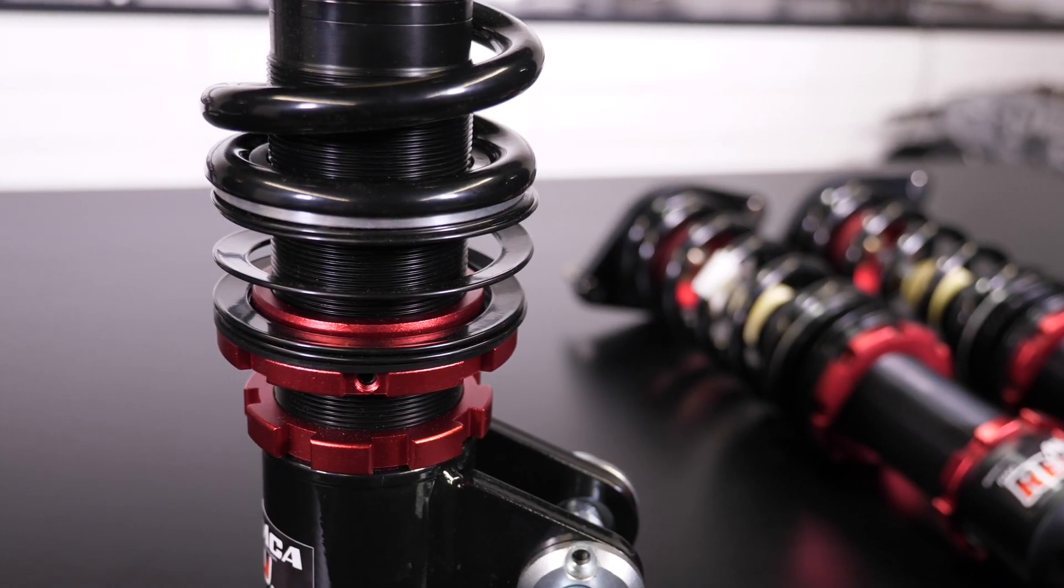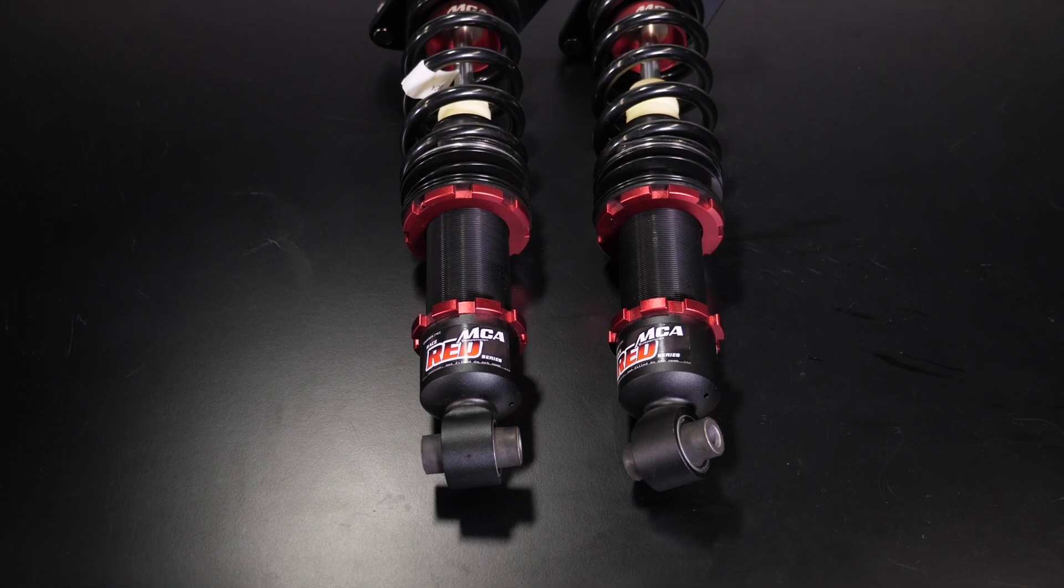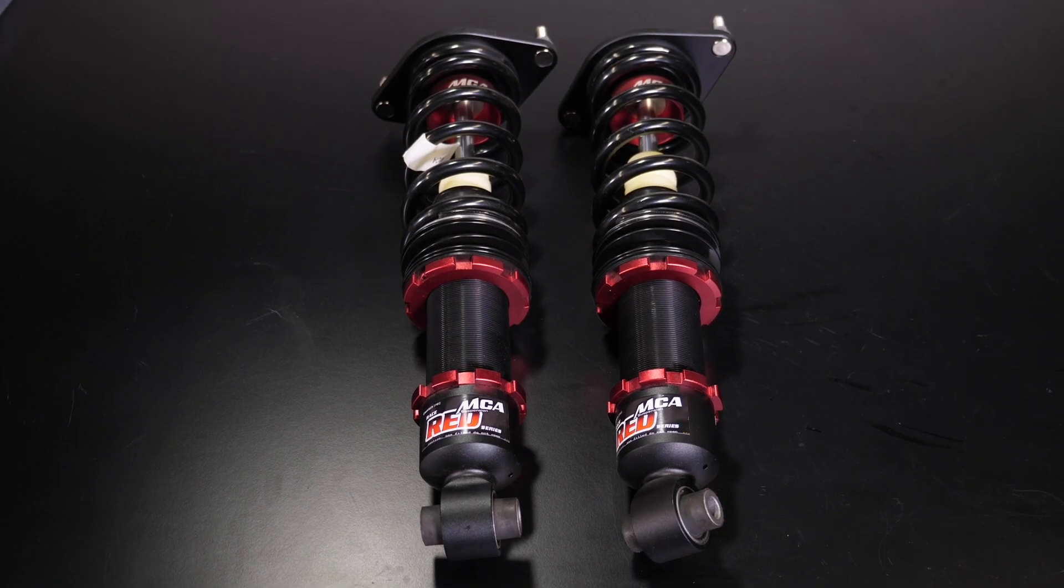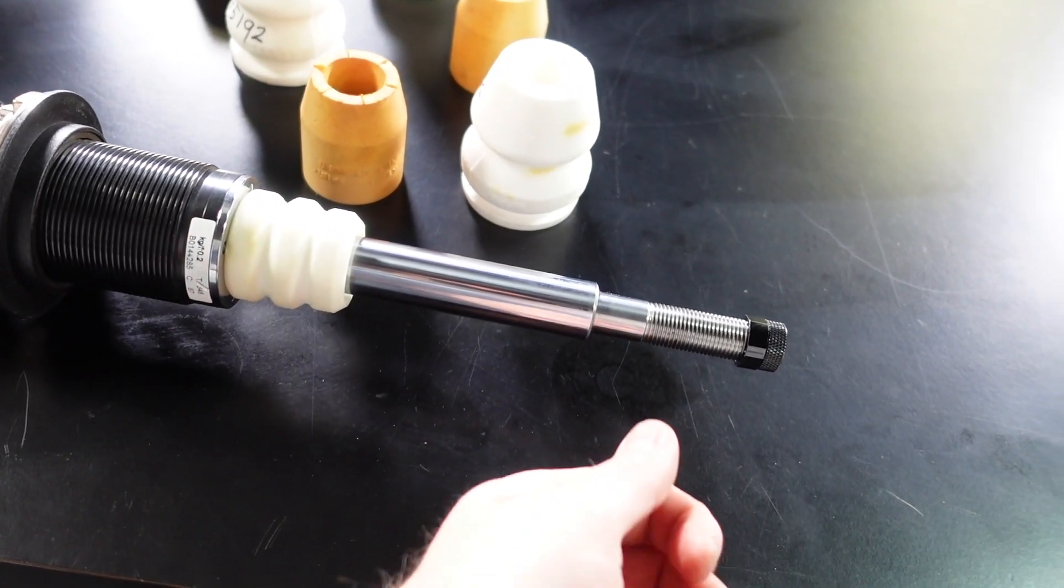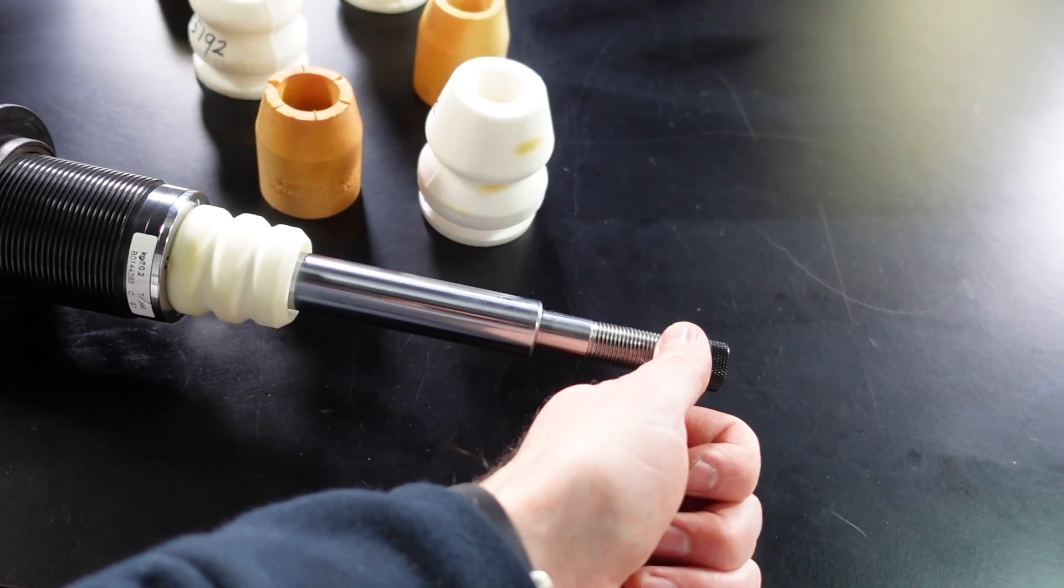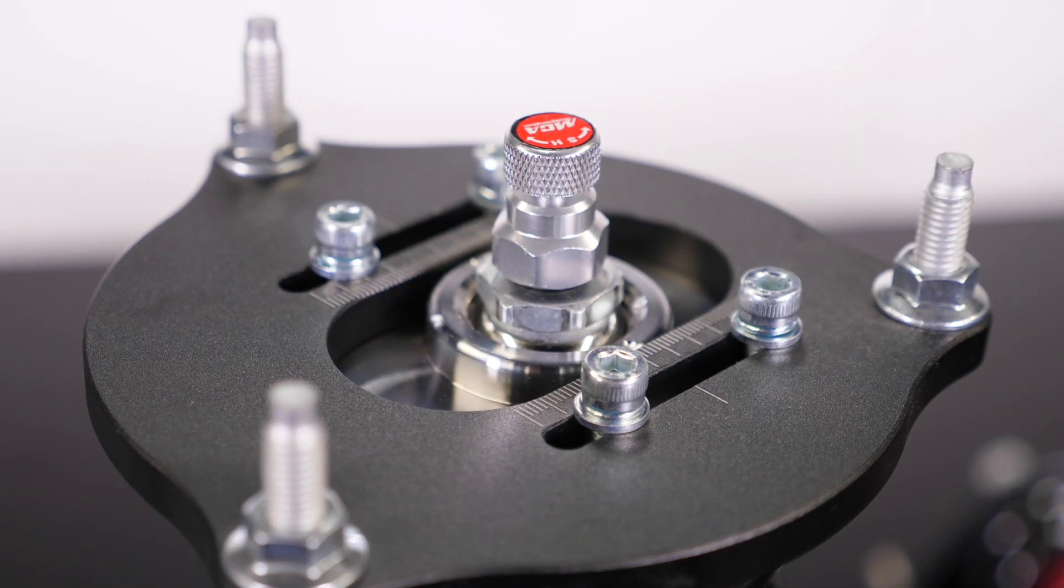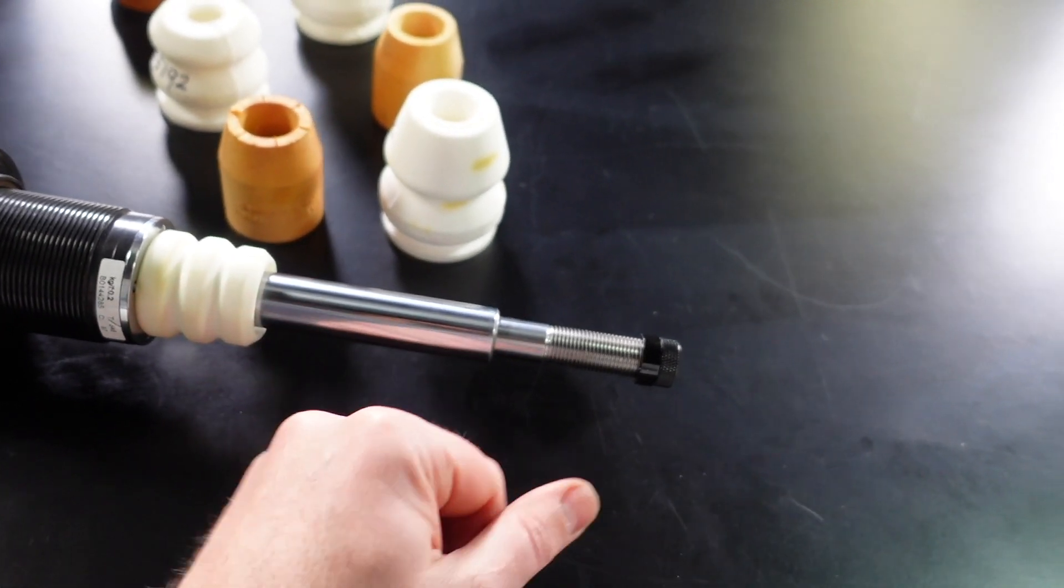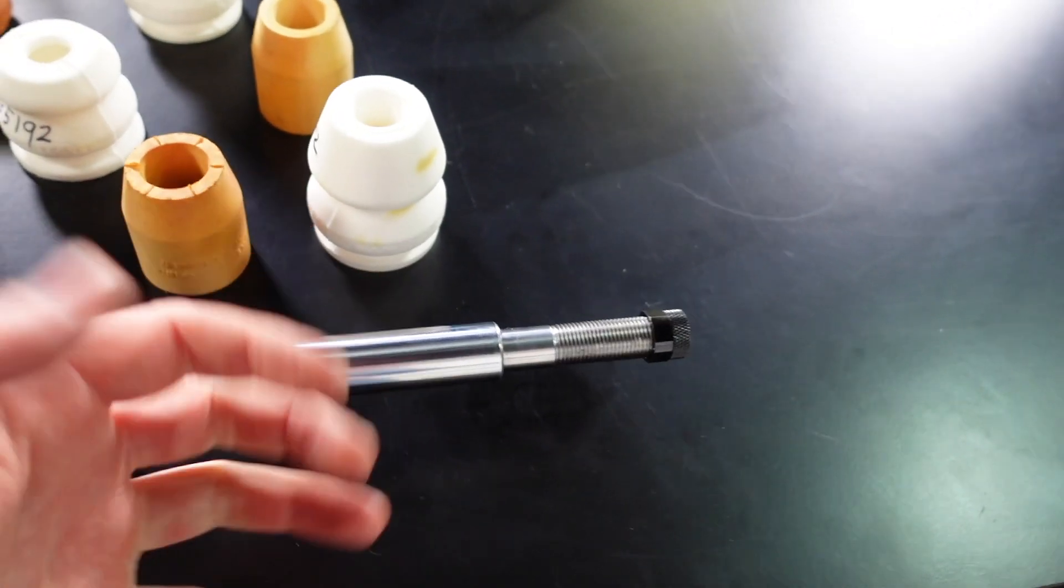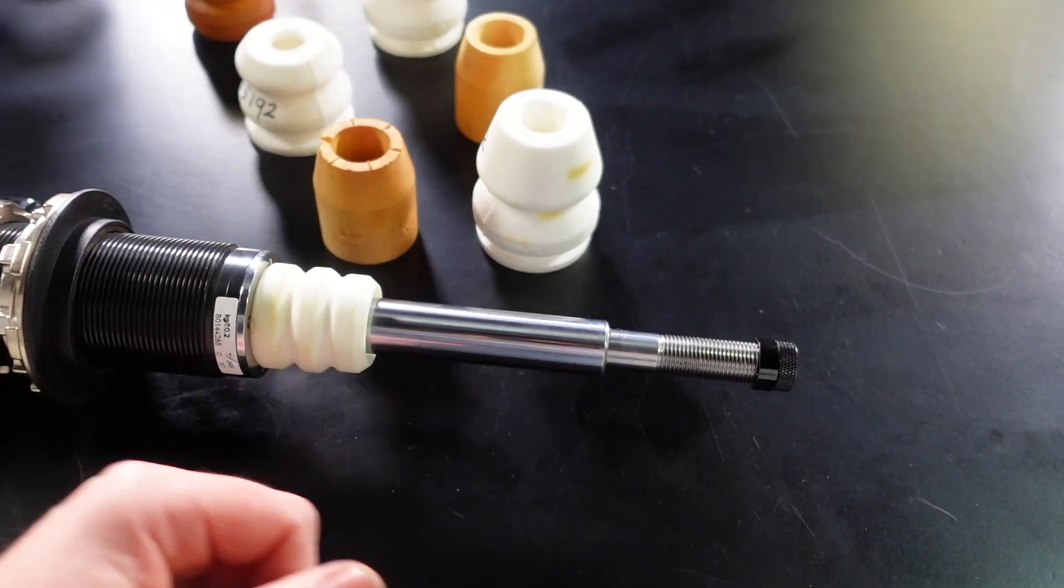In race car suspension setup you'll often hear the term bump stop gap or packer gap as a term people often use to describe how they've got their bump stops set up. So what that's referring to is, let's imagine there's a top hat sitting on the top of this suspension here, so that's essentially that top platform that will bolt to the car. This gap between the top hat and the top of the bump stop when the car's at ride height is normally what people are referring to when they're talking about bump stop gap or packer gap.